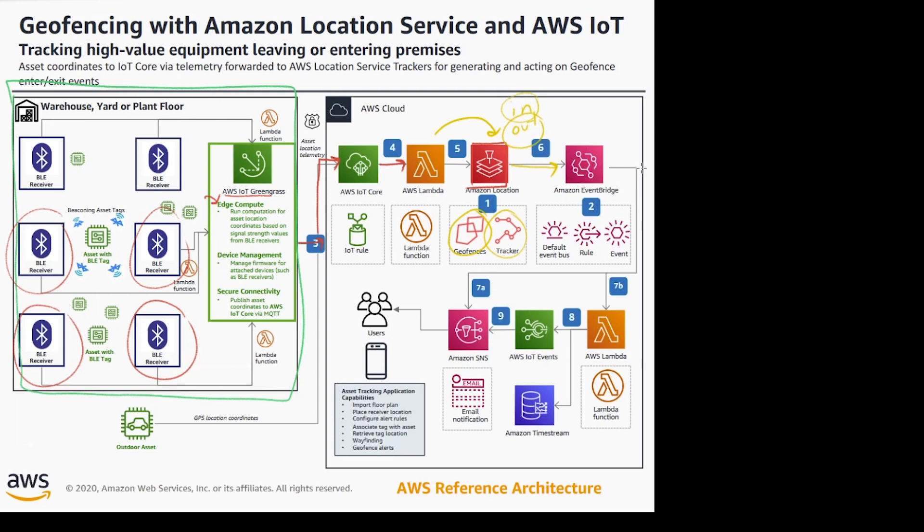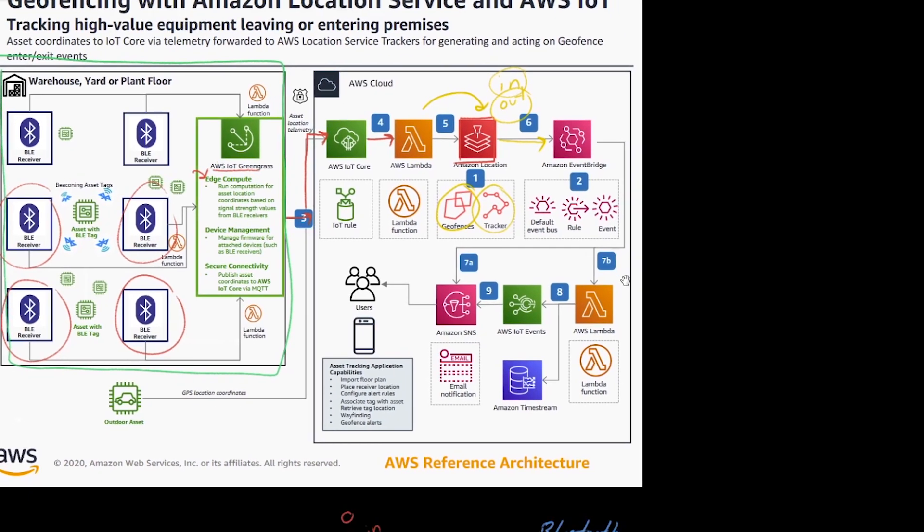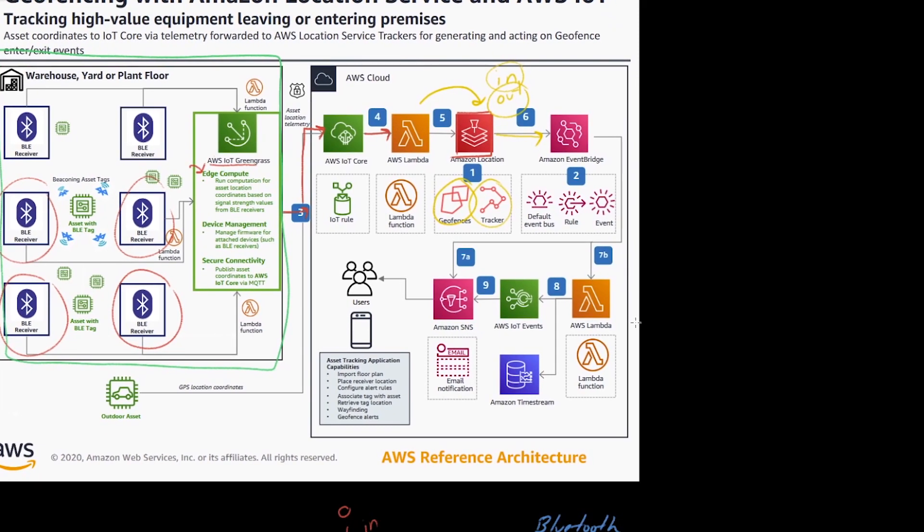Amazon EventBridge allows us to delegate who receives this event. From here we branch off in two separate directions. The first direction is we go directly to Amazon SNS and we notify our users. Our users in this case could be whoever shipped that skid of PS5s.